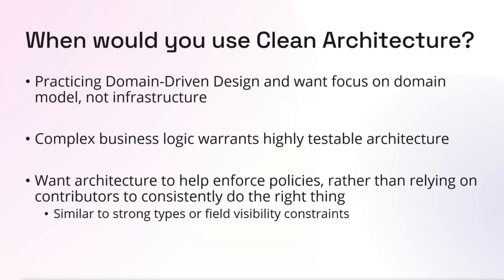If you're using C# because you like that it has a strong type system — and the compiler will tell you when you try to pass a string into an int parameter — those kinds of constraints are the same type of thing you get when you follow clean architecture. Because if someone tries to bring in a dependency on something they shouldn't, in the domain model for instance, the compiler will tell them no, sorry, you can't do that. The dependency won't work that way.